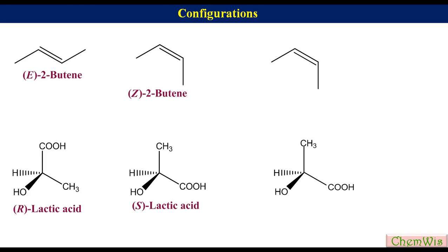Since the conversion of one spatial arrangement to another requires breaking and making of bonds, E-2-butene and Z-2-butene are the configurational isomers of 2-butene, and R-lactic acid and S-lactic acid are the configurational isomers of lactic acid.